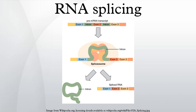Two transesterifications characterize the mechanism in which Group I introns are spliced: the 3-OH of a free guanine nucleoside or nucleotide cofactor attacks the phosphate at the 5-prime splice site, and then the 3-OH of the 5-prime exon becomes a nucleophile and the second transesterification results in the joining of the two exons. For Group II introns, the 2-OH of a specific adenosine in the intron attacks the 5-prime splice site, thereby forming the lariat. The 3-OH of the 5-prime exon then triggers the second transesterification at the 3-prime splice site, thereby joining the exons together.